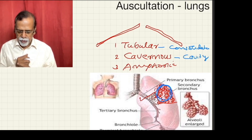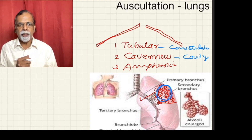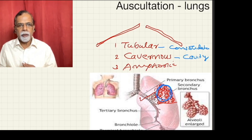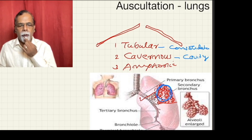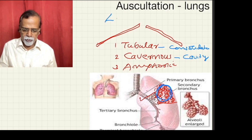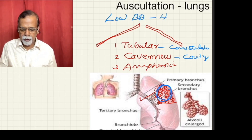Amphoric breath sound is characteristic of a large cavity that is communicating with the bronchus, and you will get a sound similar to as if you are blowing across a bottle. Amphoric breath sounds are low-pitched sounds — they are low-pitched bronchial breathing with high-pitched overtones.